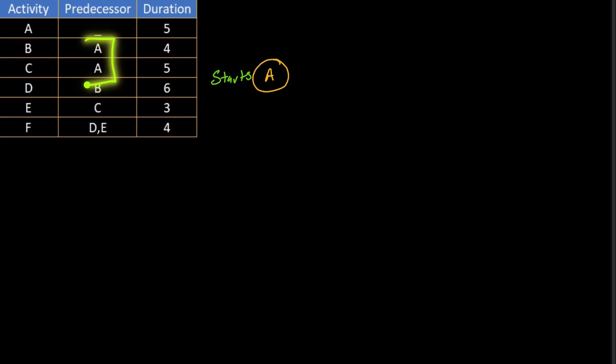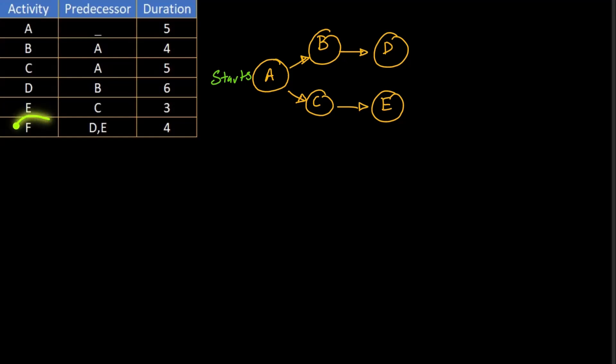After the completion of A, two other activities can start, B and C simultaneously. When B completes, D starts, and when C completes, E starts. The final activity is F which will start only after the finishing of D and E. Since F is the final activity, this makes the finishing of the project.